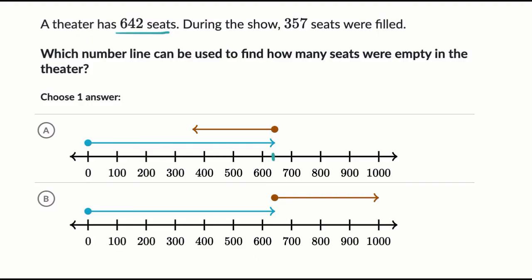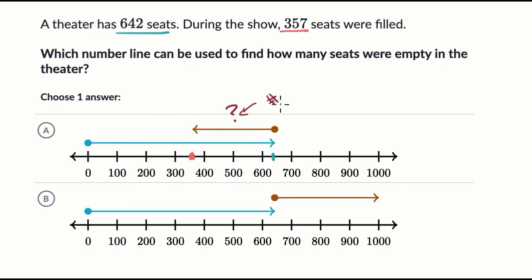So 357 is right around here, and it looks like they're subtracting some amount — I'll use that same brown color — some amount to get to 357. And that would be the number of empty seats. However much you have to take from 642 to get to 357, that right over here is the number of empty seats. So this one might be useful.